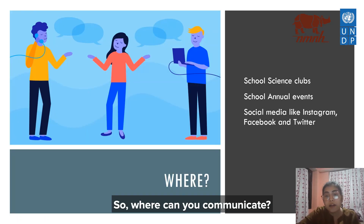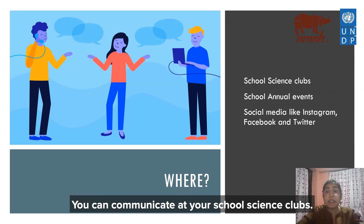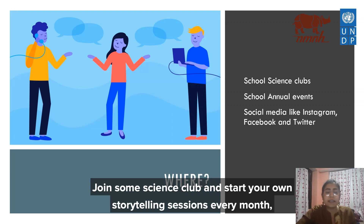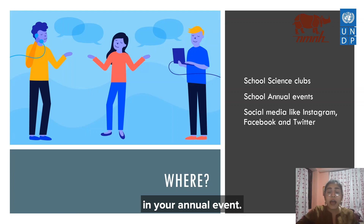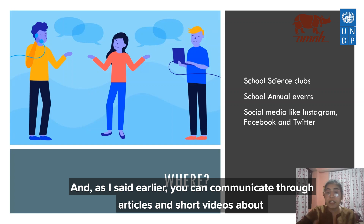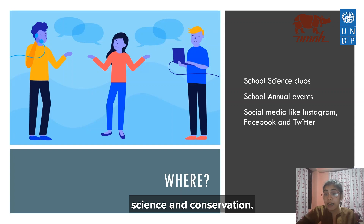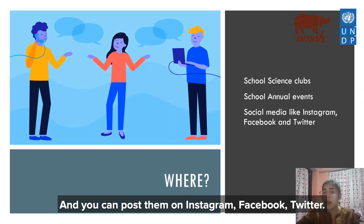Where can you communicate? You can communicate at your school science clubs — make small science clubs and start your own storytelling sessions every month. Choose topics every month and talk about them in your class or at annual events. You can write articles or make short videos about science and conservation and post them on Instagram, Facebook, and Twitter.